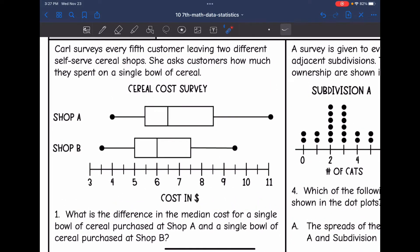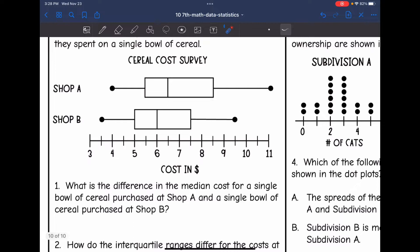Let's look at this first one. Carl surveys every fifth customer leaving two different self-serve cereal shops. She asks customers how much they spend on a single cereal bowl. The first question says, what is the difference in the median cost for a single bowl of cereal purchased at Shop A and a single bowl of cereal purchased at Shop B?